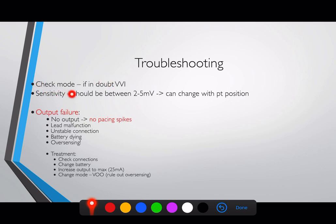Check your settings — these should be documented every ward round: what the threshold voltage was, the rate, and the sensing millivoltage. If settings have changed, change them back. If they haven't changed, consider whether the box itself has failed intrinsically and needs replacing. Also check the mode — if ever in doubt with temporary pacing wires, put it into VVI.